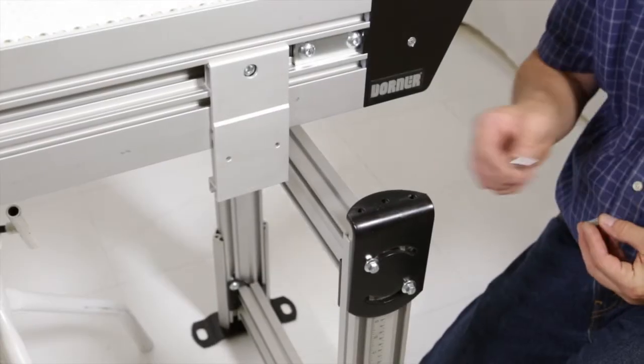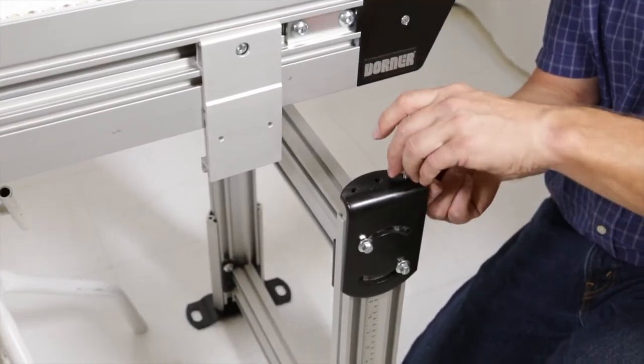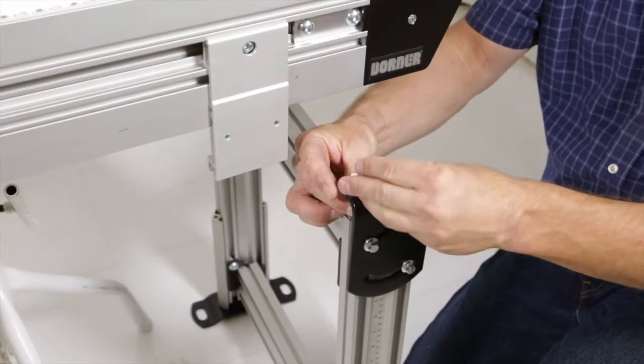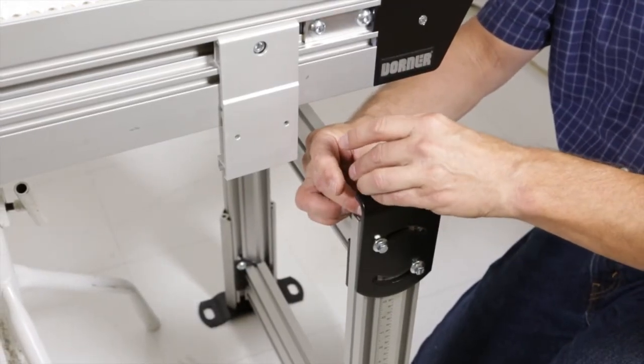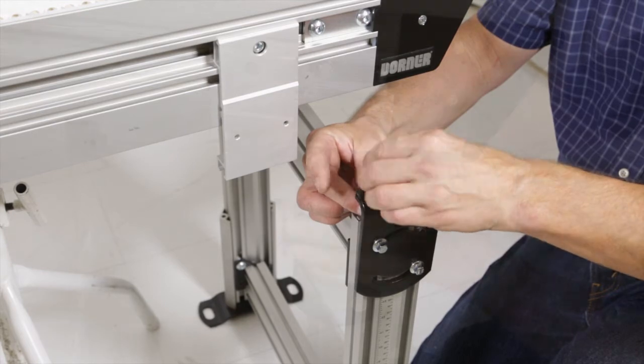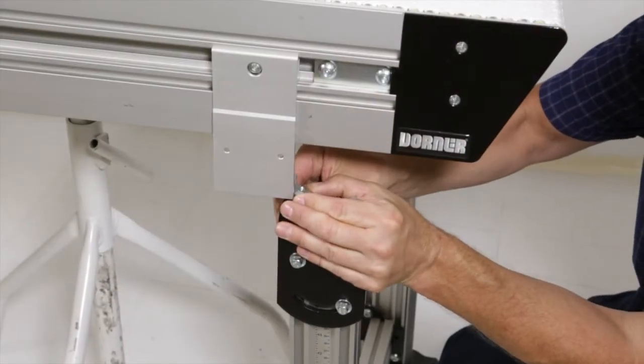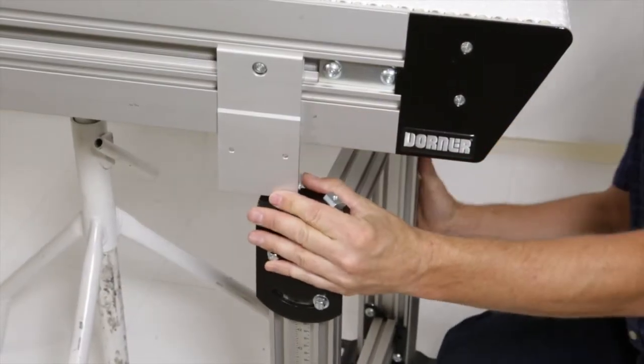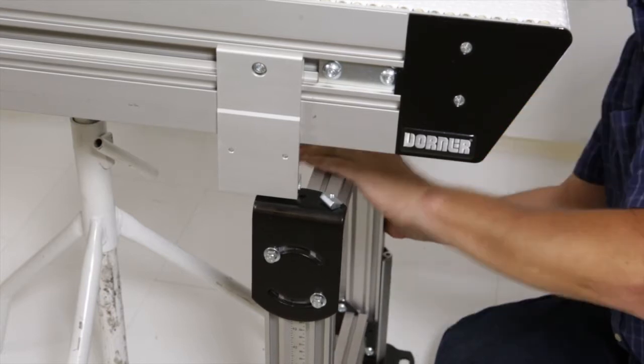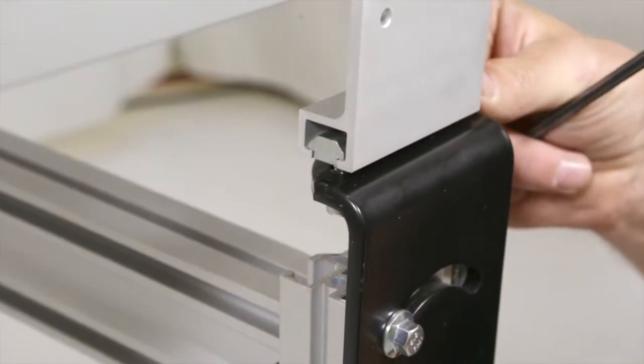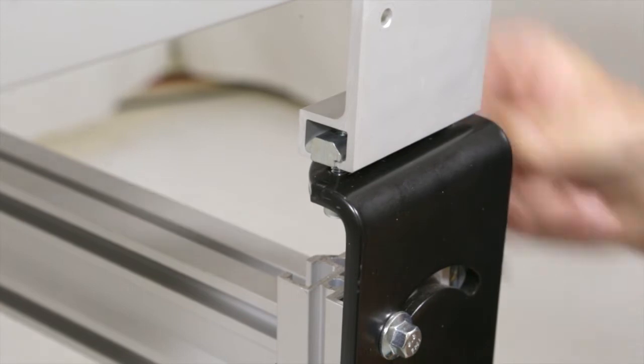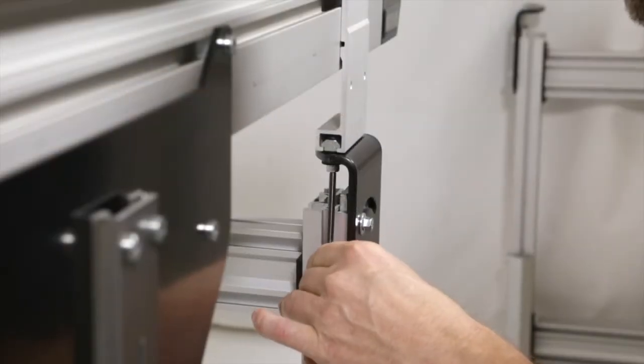Attach the t-bar, washer, and mounting screw to the support stand. Attach the support stand to the bracket. Tighten the mounting screws.